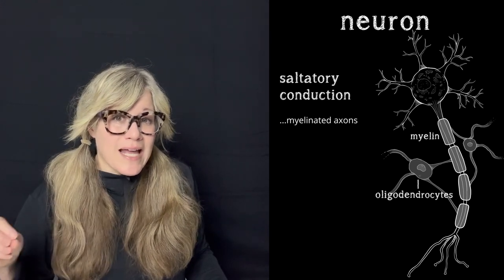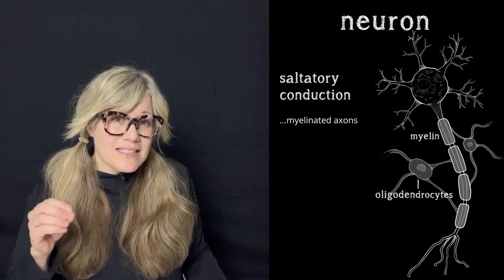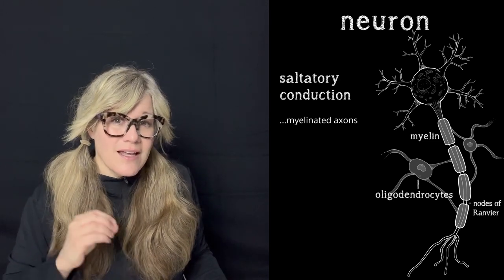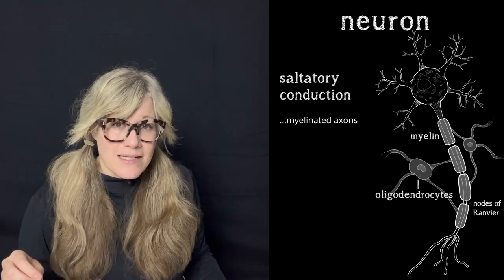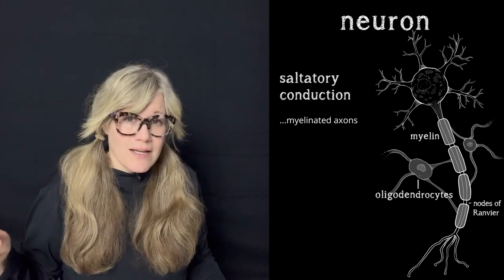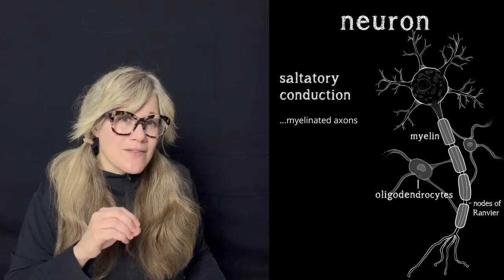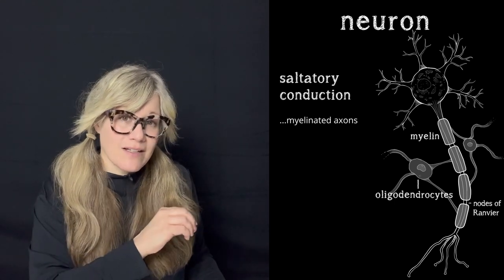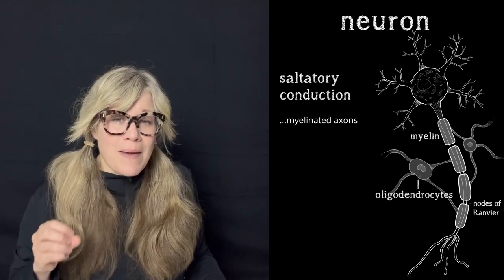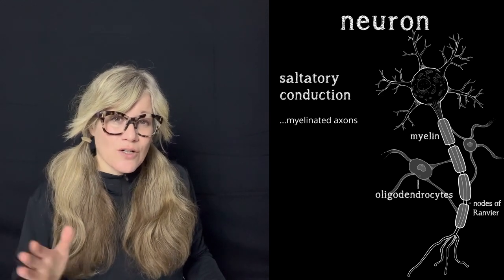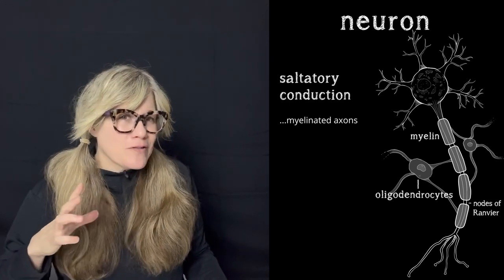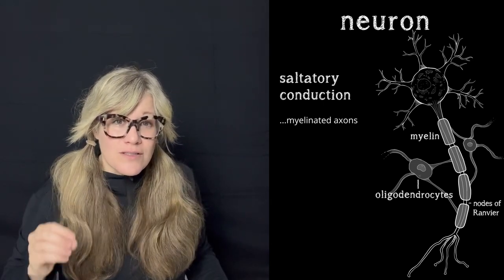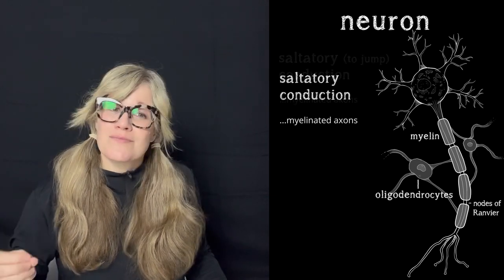One oligodendrocyte can reach out and wrap around many parts of one axon and also to multiple other axons in the vicinity. These myelin Swiss roll hands are not butted up right next to each other — there's a little space in between each of them, and those spaces are called nodes of Ranvier. Those spaces or nodes are bare naked axon completely exposed to the extracellular fluid. These exposed bits of axon are important because that is where each action potential is initiated down the myelinated axon. These nodes are packed with sodium ion channels that get activated as the current flows down the axon. The current more like jumps over myelin to the next node — the word saltatory comes from the Latin word saltis, which means to jump.